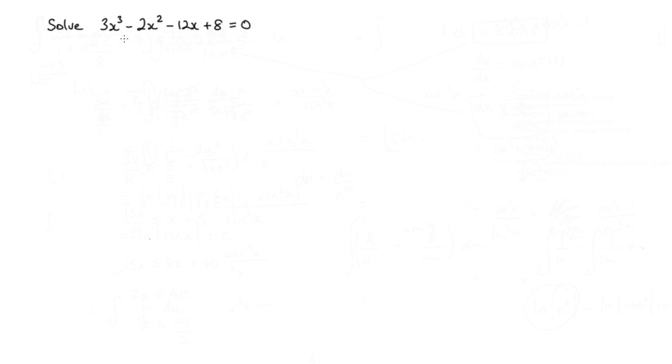And looking at this, I can spot that the 3x cubed and 2x squared - I can see a 3x minus 2 factor here, which also appears in here. So let me just show you this. I've got 3x cubed minus 2x squared. Now, let's treat that as one term. Minus 12x minus 8 equals 0.